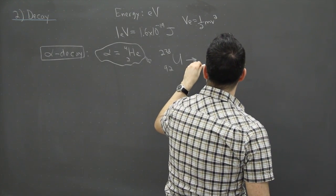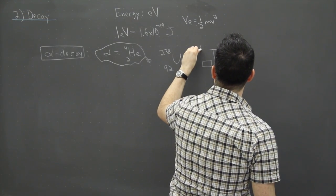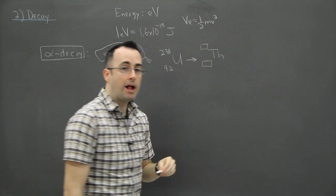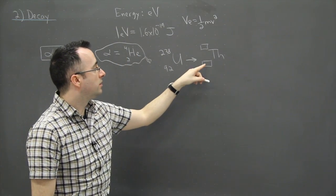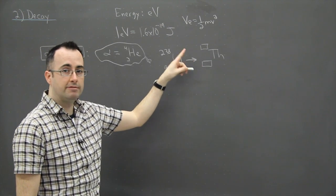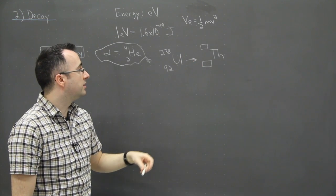So they'll tell you, basically what goes here and what goes here if it undergoes alpha decay. This might be the question. So they'll say, well what's the atomic number, what's the mass number of thorium here? That's what it will be.